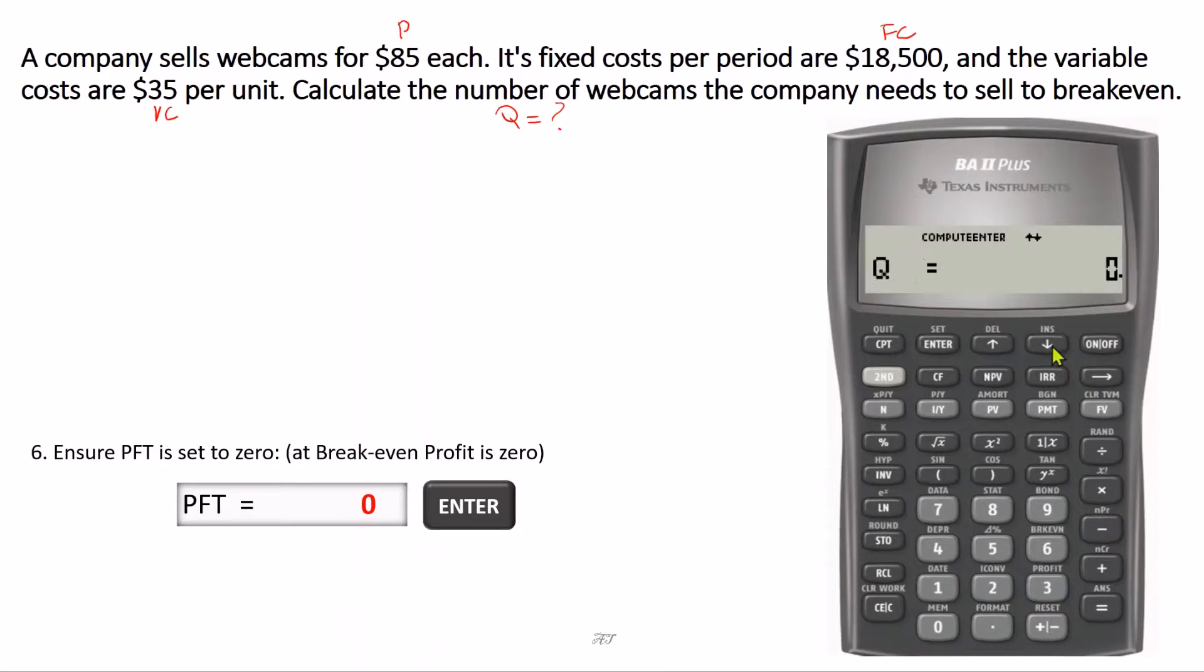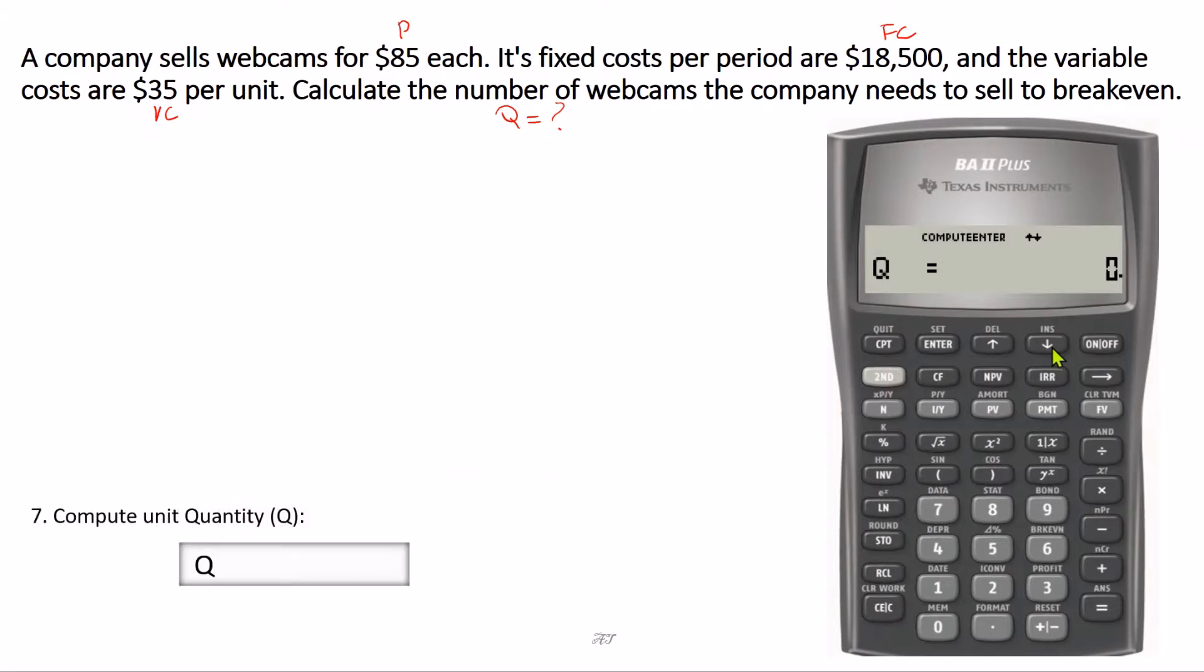Now we move on to the last variable, which is quantity, represented by Q. This is what we're looking for, the number of units of webcams in this example. We press compute. There you go, that's 370. Therefore, the company needs to sell 370 webcams in order to break even.